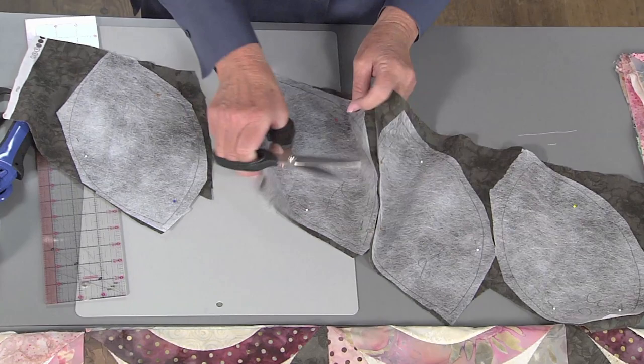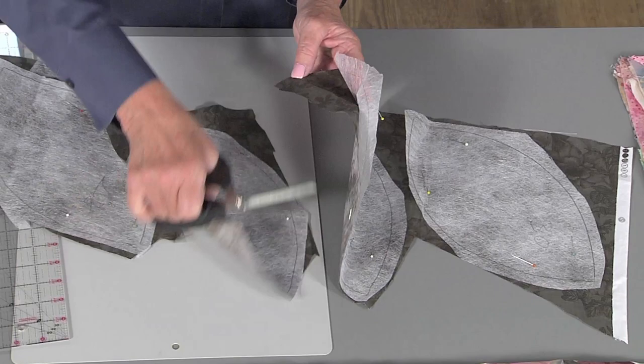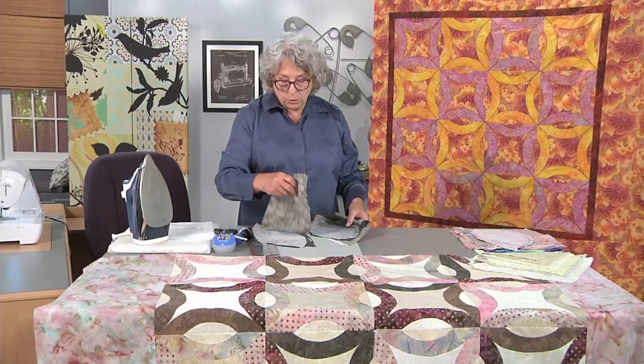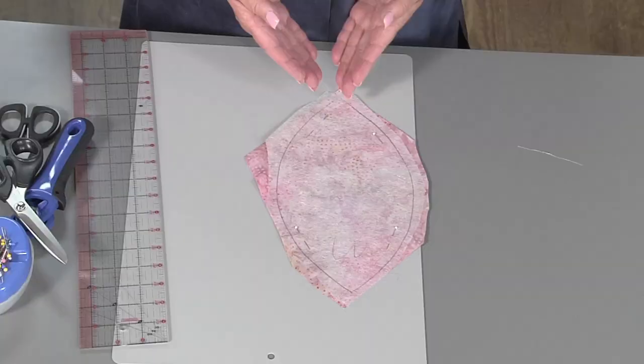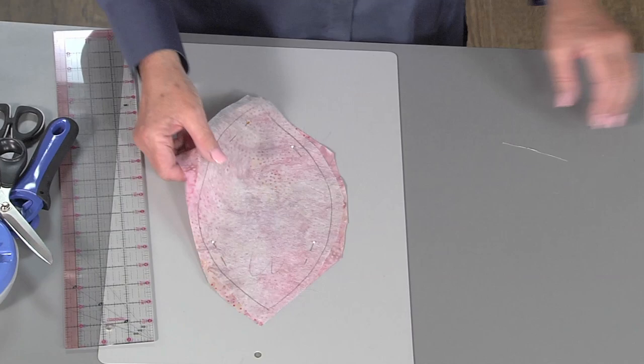Then, we're going to cut them apart from one another. Again, there's no big rush to do this. Don't try to be real fancy. People that like to be very precise try to make this very neat. It doesn't matter. When we get those all cut out, it's going to look like this.